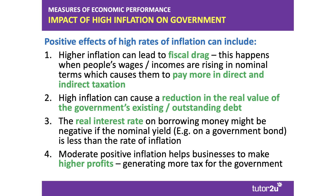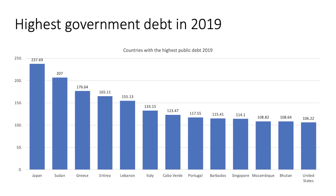More generally, if you have low positive inflation — let's say two, three, perhaps four percent — moderate positive inflation can help businesses to make higher profits, so they pay more in corporation tax. Businesses making profits might be able to pay their workers a little bit more, leading to an increase in income tax, national insurance and VAT. So moderate positive inflation, along with the fiscal drag effect mentioned, can generate more tax revenue for the government.